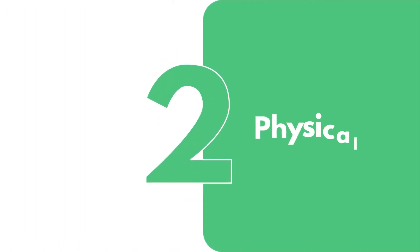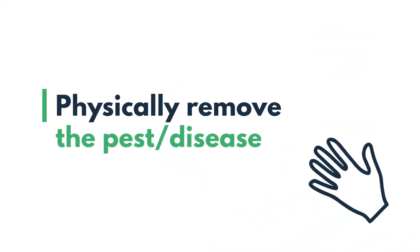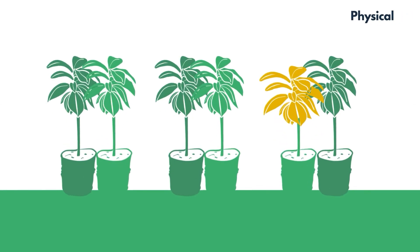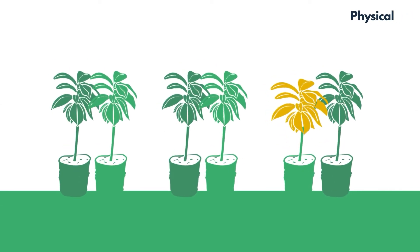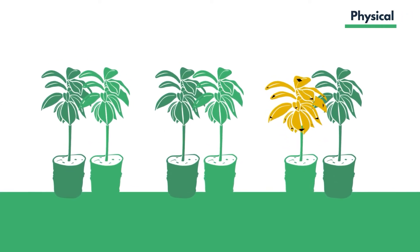2. Physical Control: Pests are physically removed. For example, by removing sick plants to avoid the spread of disease.